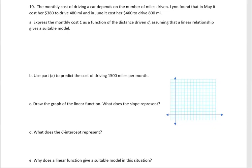Part A. Express the monthly cost C as a function of the distance driven D, assuming that a linear relationship gives a suitable model. So it says to express the monthly cost C as a function of the distance driven D. That means that we're going to say the miles leads to or determines the cost. So that means that miles is going to be X, and cost would then be our output value, and cost is going to be Y.